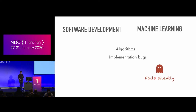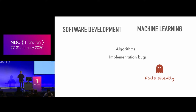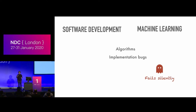Software development and machine learning are fairly similar — you can get implementation bugs, you use algorithms in both. But with machine learning it's still the case that it can fail silently: you can get completely wrong results without anyone noticing. That's what I want to look at today.